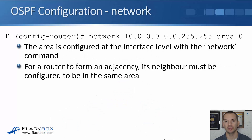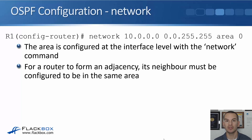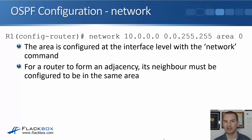The area is configured at the interface level with the network command. For example: network 10.0.0.0 wildcard mask 0.0.255.255 area zero. Any interfaces on this router with an IP address that falls within that range will be enabled for OSPF and placed in area zero. For a router to form an adjacency, its neighbor on the other side of the link must be configured in the same area. If there's an area mismatch, the adjacency won't come up and the routers will not share routes.